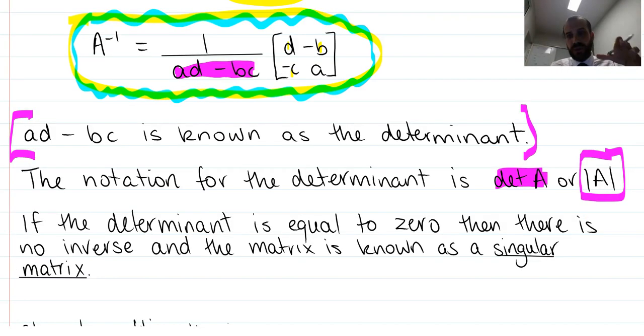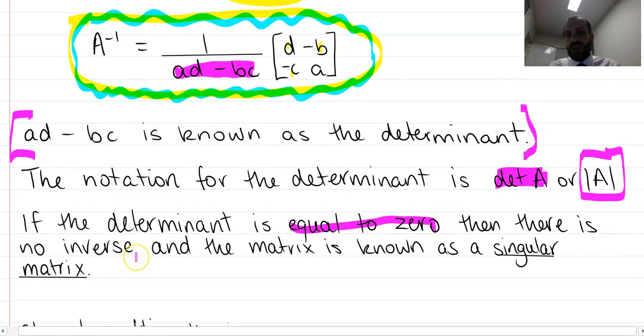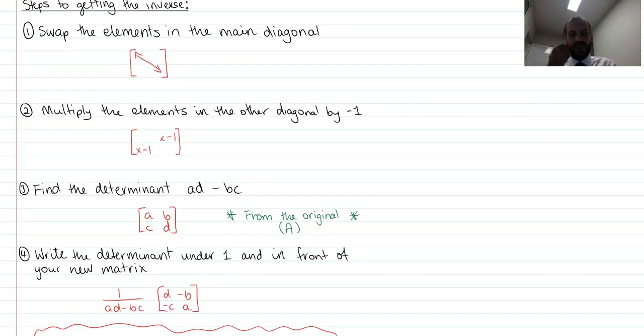Unfortunately, sometimes there just is no inverse. Just because you have a matrix A does not mean that you're going to have an inverse A to negative 1. You'll know that because if you get a determinant equal to 0, there's no inverse, and it's what we call a singular matrix. It's just not going to work because if you get A, D minus B, C equal to 0, it's going to be 1 divided by 0, and that's just bad when it comes to math.